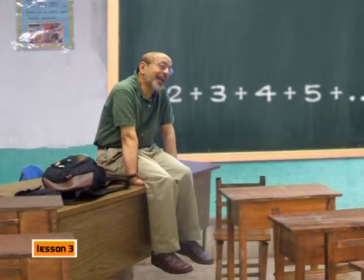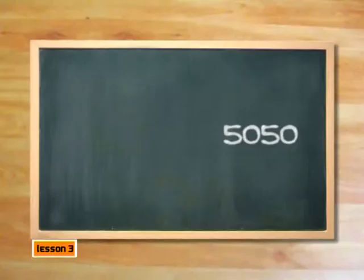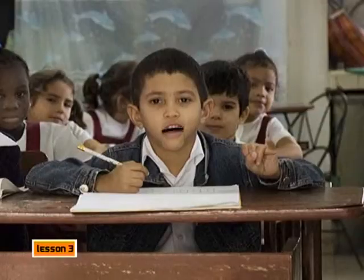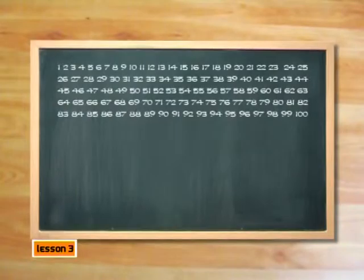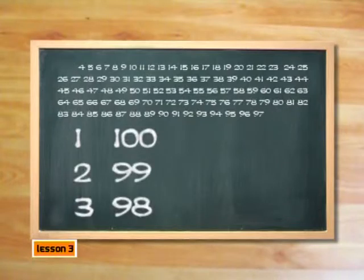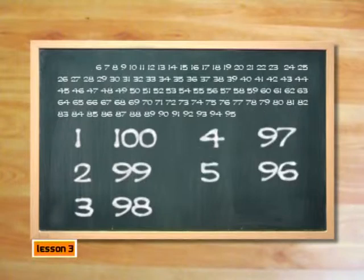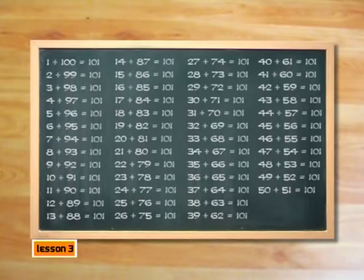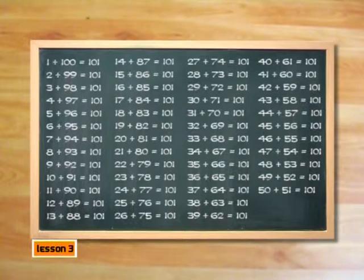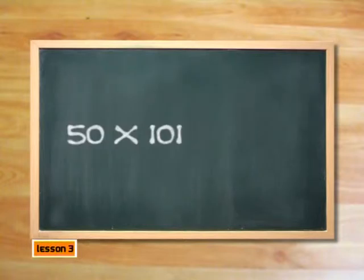The teacher is astounded because the boy is correct. How could he possibly have worked out this answer so quickly? The youngster shows the teacher his method. He noticed that if he pairs the numbers 1 with 100, 2 with 99, 3 with 98, 4 with 97, 5 with 96, and so on, each pair of numbers adds up to 101. The boy also saw that there would be 50 such pairs, since there were 100 numbers grouped in pairs. So the sum of all the numbers must be 50 times 101, which is 5,050.